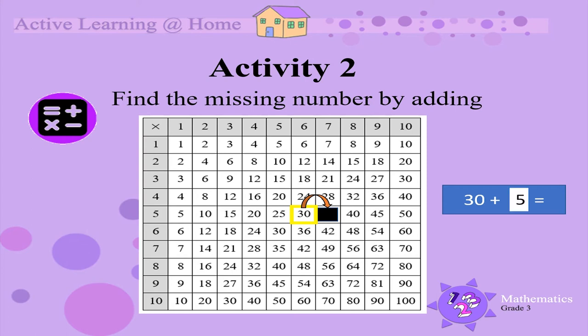If you said 5, you are correct. You add 5 to 30 because 30 is in the 5's row. And in the 5's row, we count in 5's. Therefore, the missing number is 35.